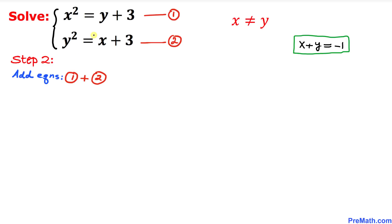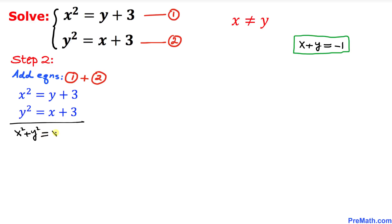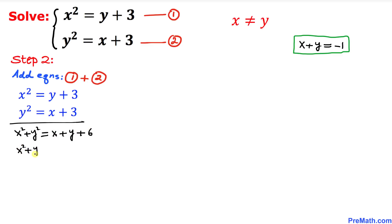In the next step, let's add equation one and equation two. When we add them we get x squared plus y squared equal to x plus y plus 6. We know that x plus y equals negative one, so we replace x plus y with negative one. Therefore x squared plus y squared equals negative one plus 6, which gives us positive 5.